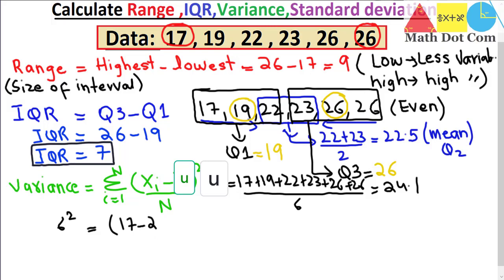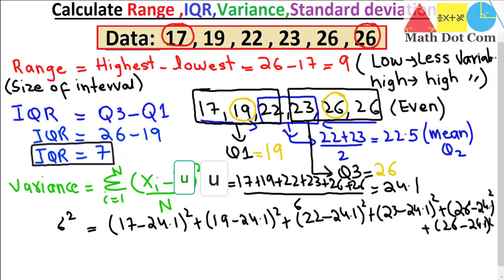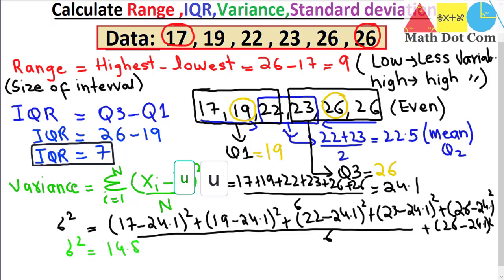Now we put all values into the variance formula: (17 minus 24.1)² plus (19 minus 24.1)² plus (22 minus 24.1)² plus (23 minus 24.1)² plus (26 minus 24.1)² plus (26 minus 24.1)², all divided by 6. So σ² equals 14.87. This is the value of the variance of the given data set.